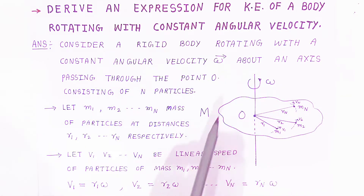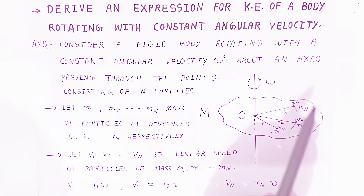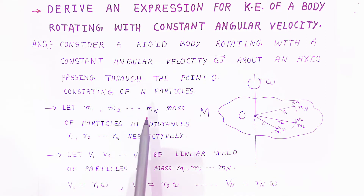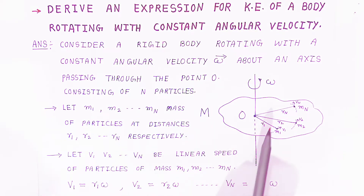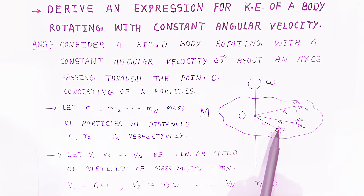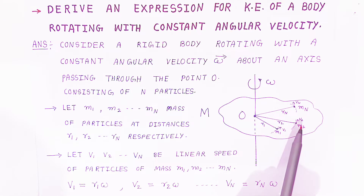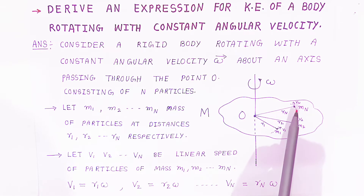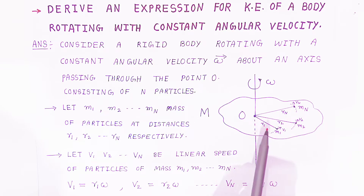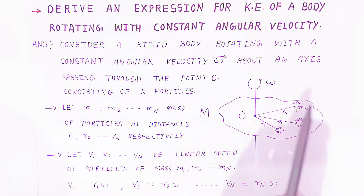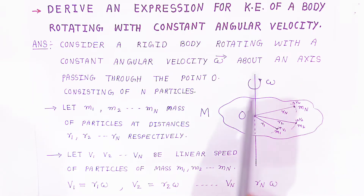Consider this irregular body is made up of n number of particles. Let m1, m2, ... mn be the masses of particles at distances r1, r2, ... and rn from the axis. So the first particle has mass m1, the second particle mass m2, and the nth particle has mass mn, present at distances r1, r2, and rn respectively.